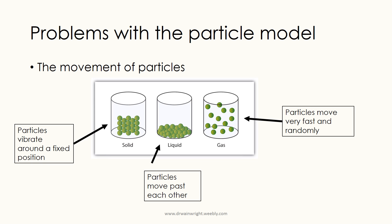In a solid, the particles don't move past each other, but they are still continually moving. In a liquid, the particles are still very close together, but they're continually moving past each other, so the particle that is next to another particle one second will be next to a completely different particle the next second. In the gas diagram, the particles are moving very fast in random directions — not just past each other, but away from and towards each other — and that's not clearly shown in these diagrams.